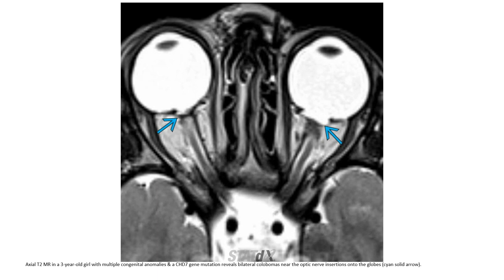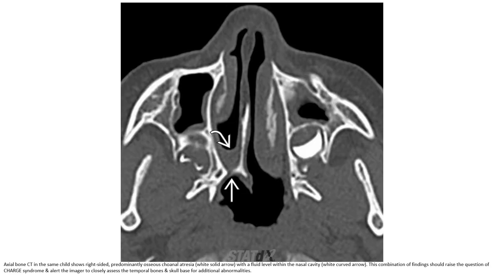This is MRI in a three-year-old girl with multiple congenital anomalies and a CHD7 gene mutation, revealing bilateral colobomas near the optic nerve inserted onto the globe. Axial bone CT in the same child showed right-sided prominent osseous choanal atresia with a fluid level within the nasal cavity. This combination of findings should raise the question of CHARGE syndrome and alert the imager to closely assess the temporal bone and skull base for additional anomalies.